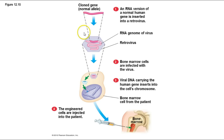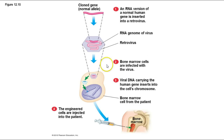Here's a process you might follow: you have your cloned gene for the normal allele and the RNA genome of the retrovirus, and then you grow that in bone marrow cells or whatever kind of cells the individual needs. For something like sickle cell anemia, you would grow bone marrow cells from the individual in culture, infect those with the virus, and then inject those engineered cells back into the patient. At least some cells would take hold in the bone marrow and produce normal blood cells with normal hemoglobin rather than sickle cell hemoglobin.